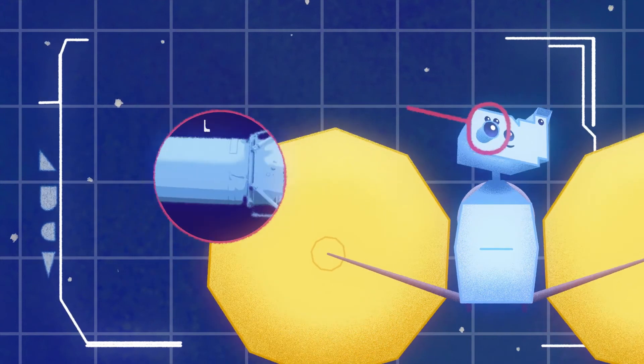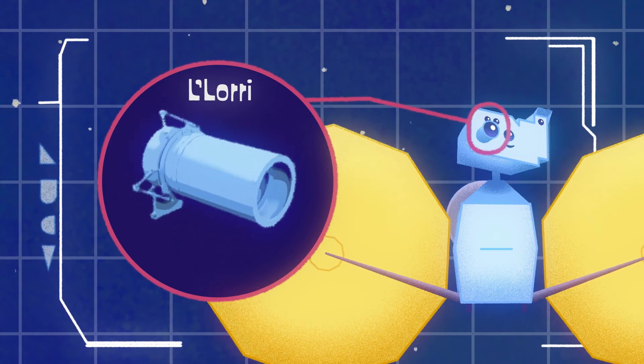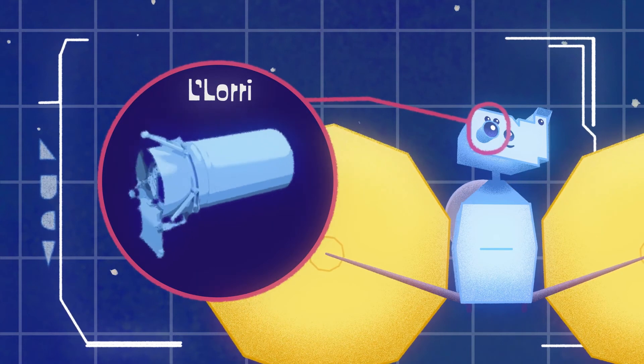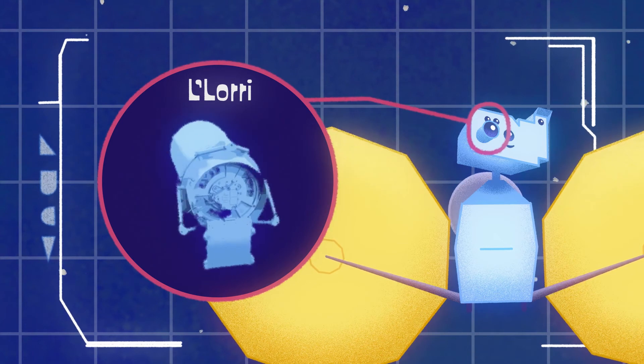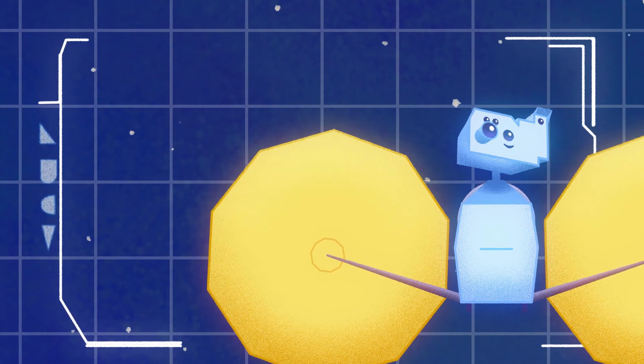Next, this is LeLaurie, the long-range reconnaissance imager. This camera will provide the most detailed images of the surfaces of the Trojan asteroids to help scientists figure out what's been happening since our solar system formed.